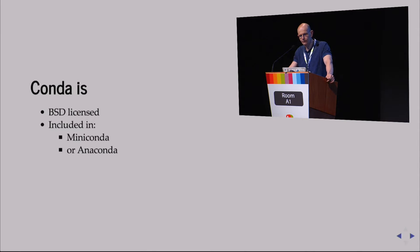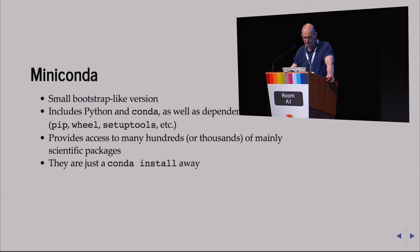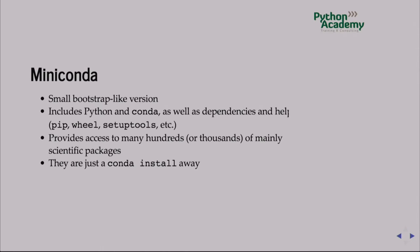It comes from the scientific community but can be useful for every Python programmer. It's BSD licensed. Typically you install either Miniconda or Anaconda. Miniconda is a small bootstrap-like version — it includes Python itself, Conda, and a bunch of dependencies like pip and wheel and some other tools. It provides access to many hundreds or even thousands of libraries, and you just say 'conda install'.